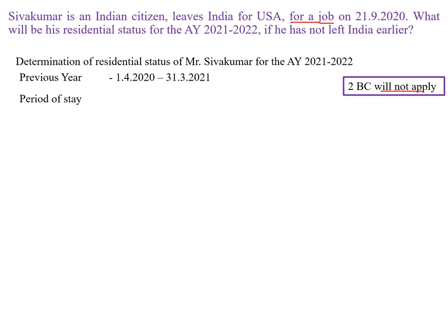For calculating the period of stay during the previous year, look at the dates given in the question. The first date is 21-9-2020. Will this date come within our previous year? Yes, it will fall within this previous year period, so write it in the rough column. What happened on 21-9-2020? The person left India. As I already told you, there are only two situations — either he came to India or he left India. In the previous example, the person came to India so that was the opening date. Now in this example, the person left India, so this date will be the closing date. Since there is no other date given, the opening date will be the opening date of the previous year. This is the period during which he was inside India during the previous year.